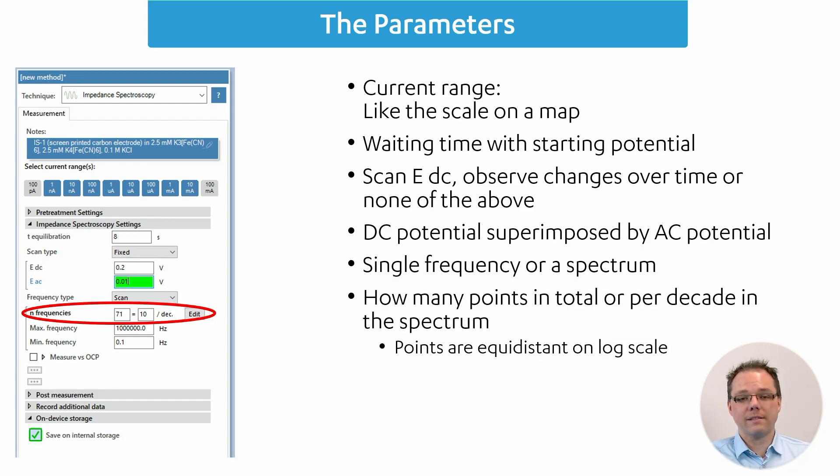Then you have the number of frequencies that you want to set. You can either set in the left field how many points you want in total, or you can set on the right one how many points you want per decade. A decade here means distances that increase by multipliers of ten. So one decade will be from one to ten, then from ten to a hundred, then from a hundred to a thousand.